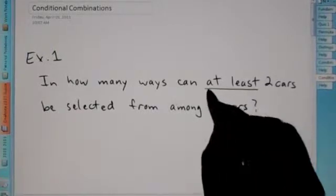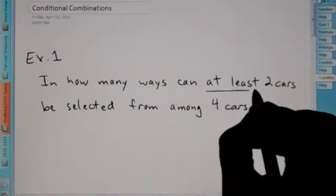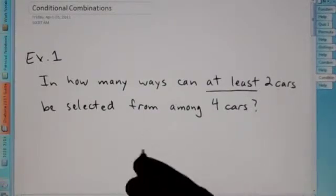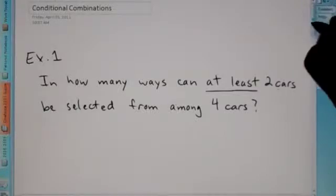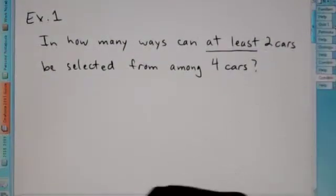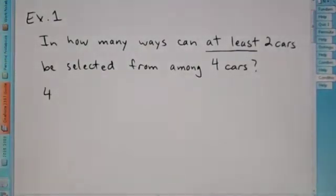The keyword here is at least. So at least means we could have two cars, or three cars, or four cars. So we have to treat this as three separate problems. As we did combinations before, we put our total possible here, four cars.